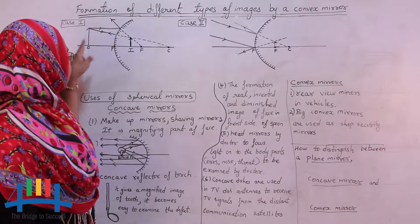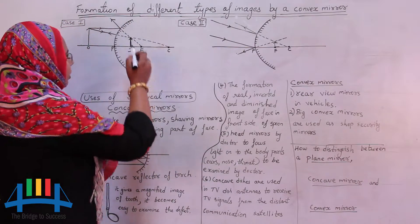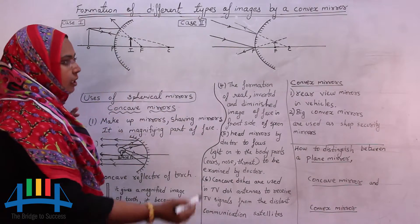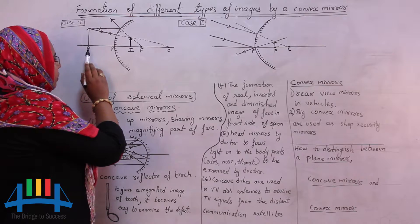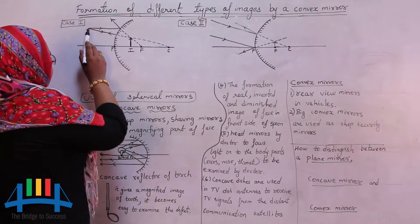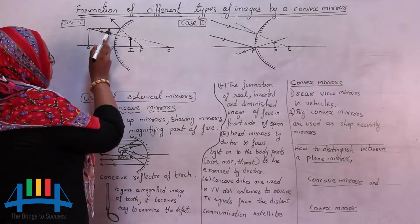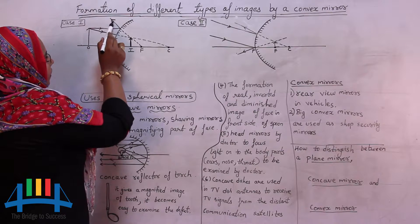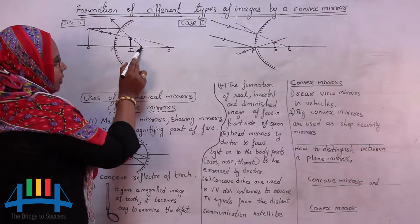Let us see the first case. This is the convex mirror — one side is polished and the inner surface has oblique lines. We have an object placed in front of a convex mirror, between the pole and infinity. According to the first rule, when the incident ray is parallel to the principal axis, it appears to pass through the focus. When you extend this reflected ray backwards, it appears to pass through the focus.